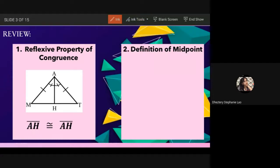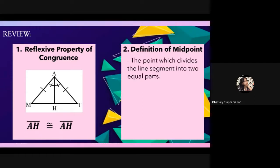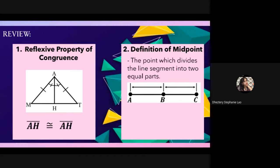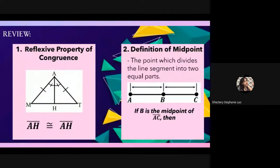Because it divided the segment into two. If B is the midpoint of segment AC, what congruent statement can we form? Which parts are congruent? Valenzuela answers: if B is the midpoint of AC, then line AB is congruent to line CB.